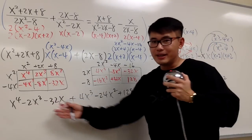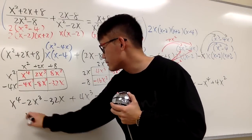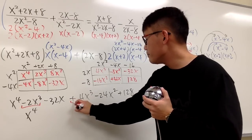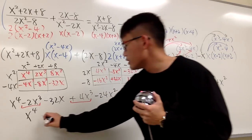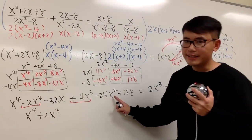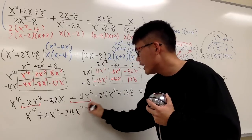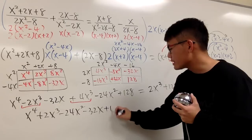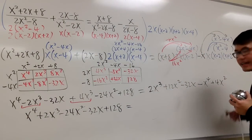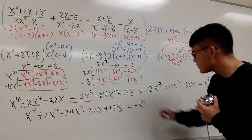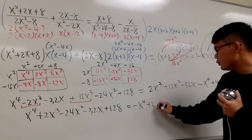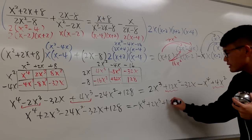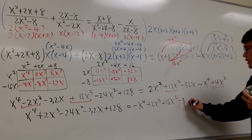And we have the combining terms on the left-hand side first. Let's go ahead and do it. We see we have x to the fourth power by itself. So let me just write it down. Let's look at the third power here on the left-hand side. We have negative 2x to the third power and positive 4x to the third power. Together, it's going to give us plus 2x to the third power. And then the only x squared term we have is negative 24x squared. And the only x term we have is negative 32x. And the only constant term is plus 128. And this is equal to, on the right-hand side, negative x to the fourth power. And the only x to the third power term is plus 2x to the third power. And for the x squared term, 12x squared plus 4x squared gives us plus 16x squared. And lastly, we have minus 32x.